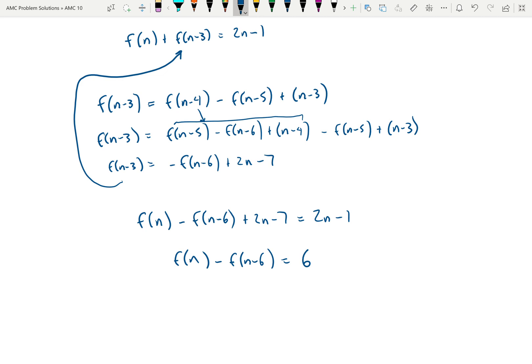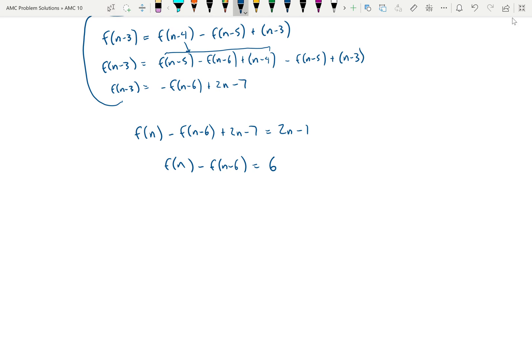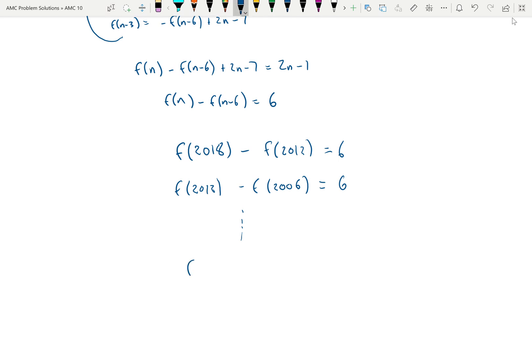And so that's pretty useful. So what that means is f(2018) - f(2012), that equals 6. And same with f(2012) - f(2006), that equals 6, all the way down to f(8) - f(2) is equal to 6.